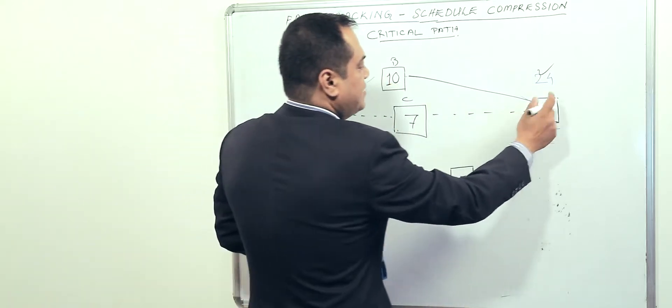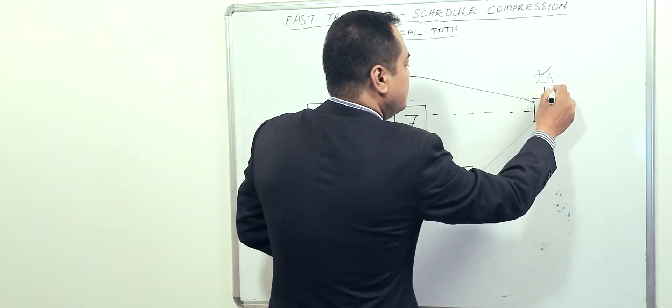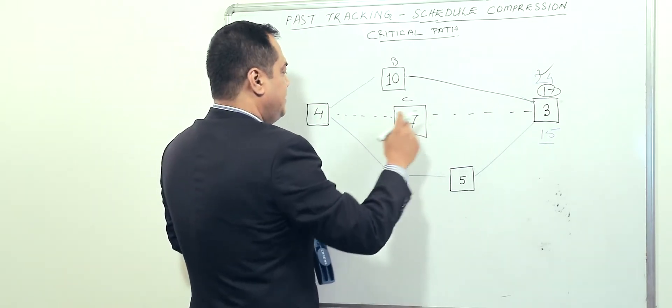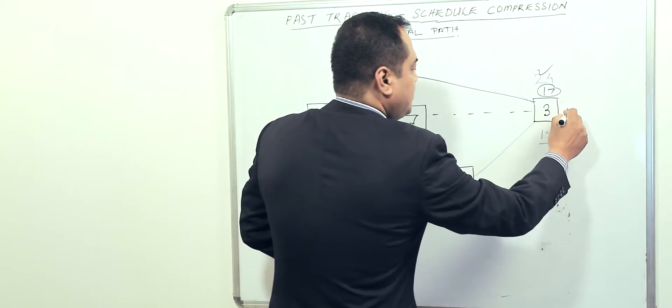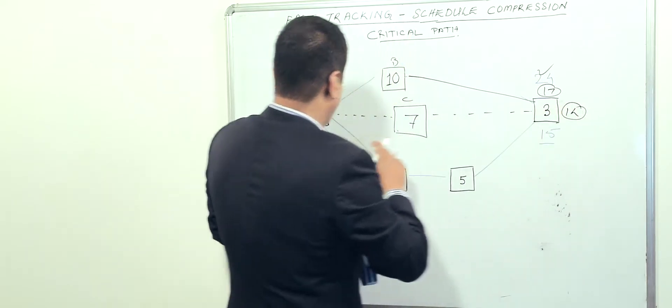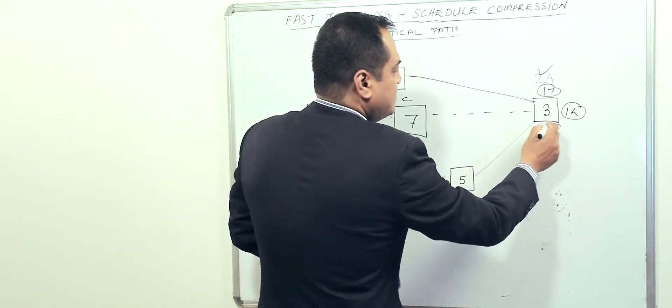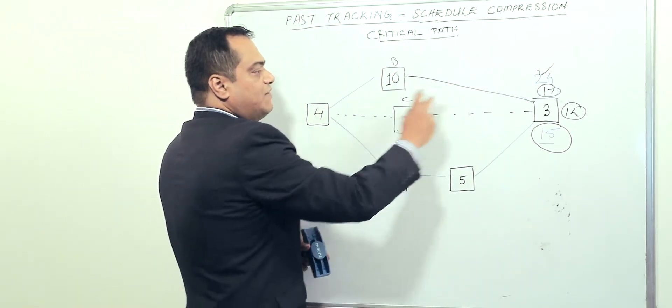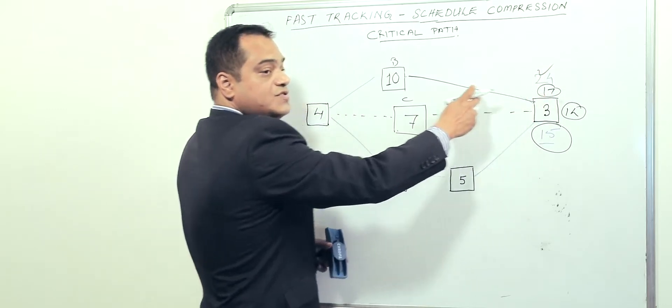It will be four, ten, and fourteen and three - that's going to be seventeen. We have four, seven, and three - that's ten. This is going to be fourteen, and this one remains as fifteen.